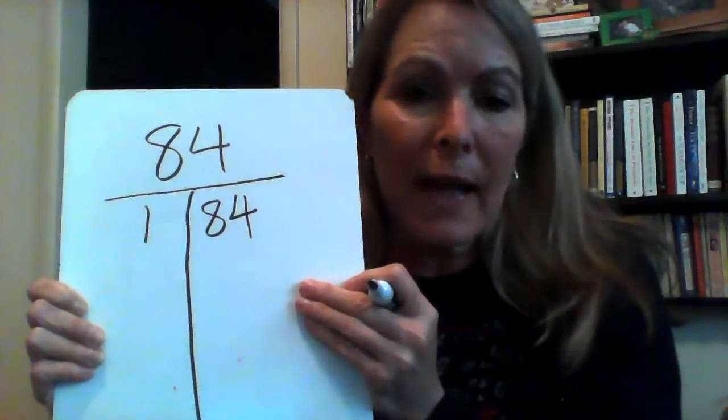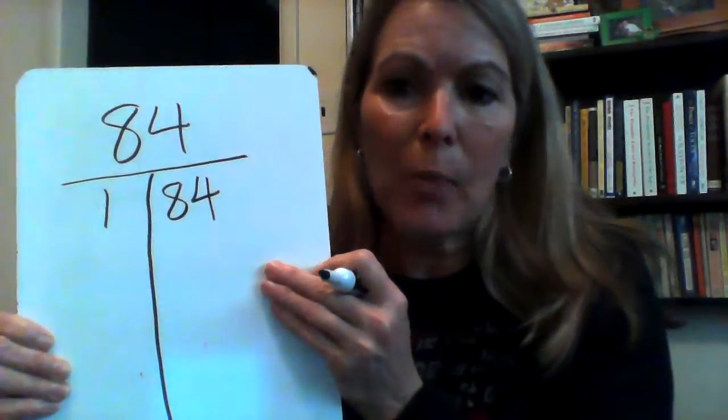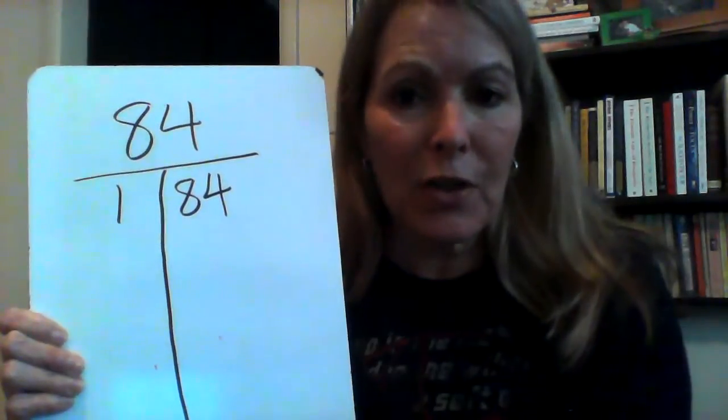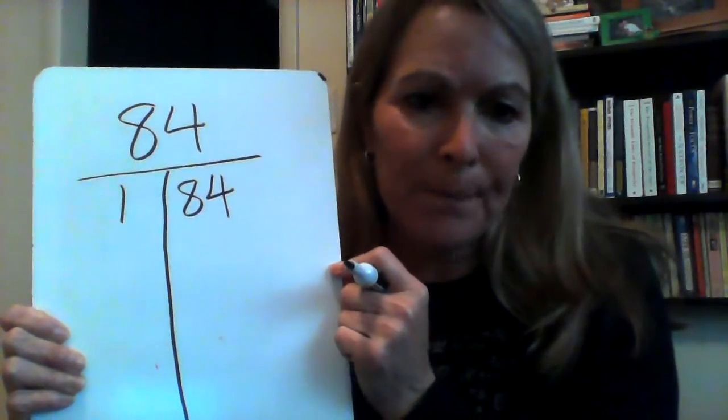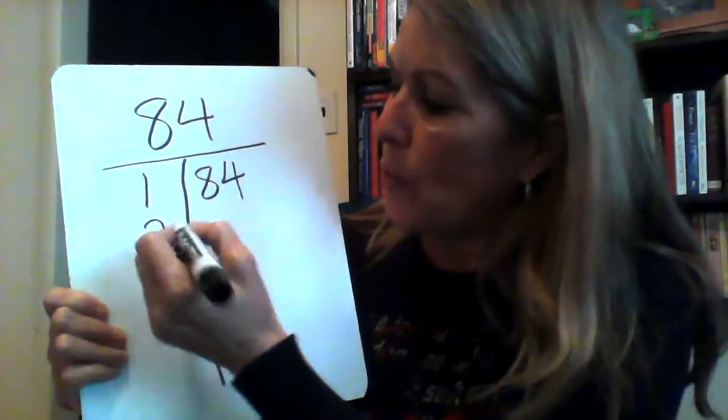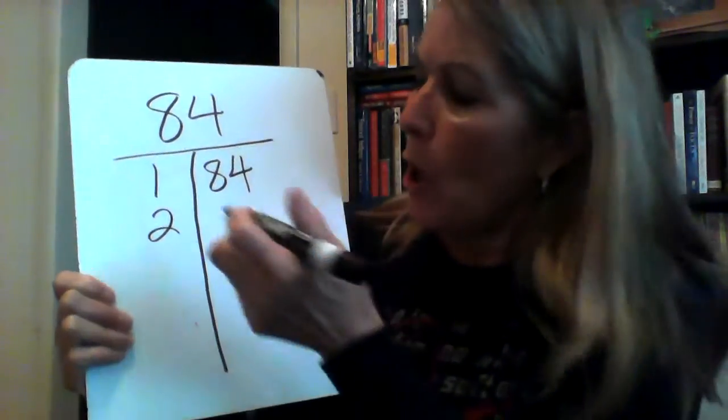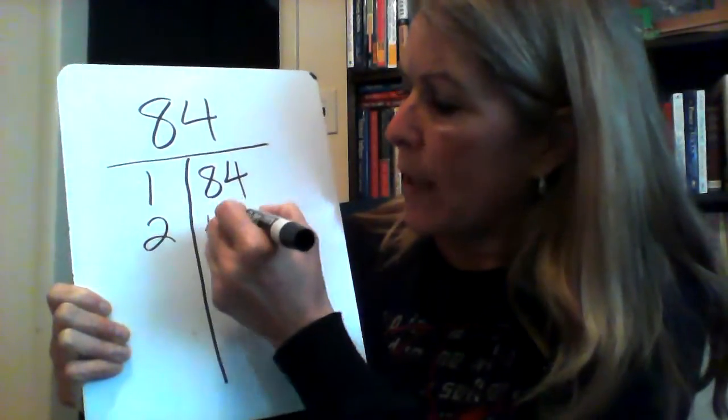Now, the second factor that I look for is a 2, and that's easy to tell because it will have a 2 because 84 is an even number. So it's going to be 2 times half of 84, which is 42.